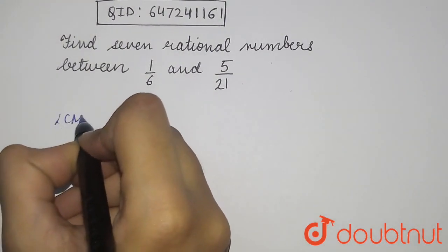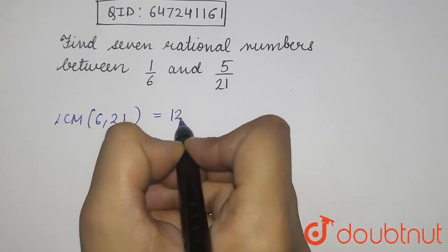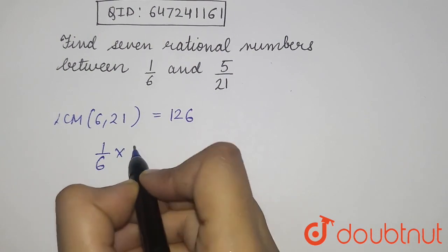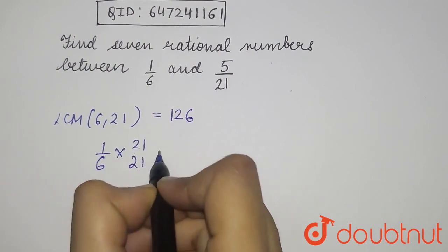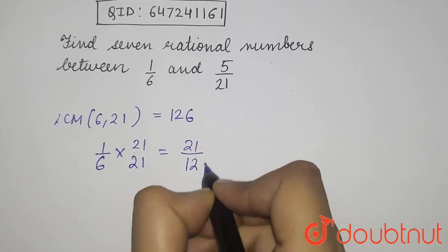First of all, we will get LCM of 6 and 21. It is 126. So, 1 by 6, we will convert it in equivalent fraction and 21 into 21. We will multiply it up and down too. So, we will get 21 by 126.